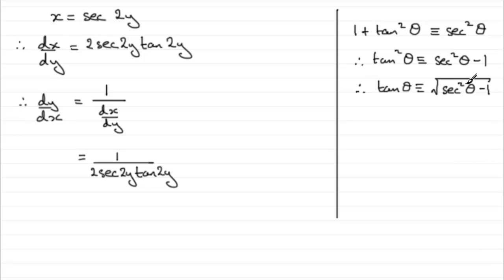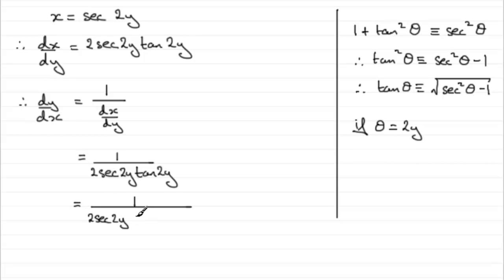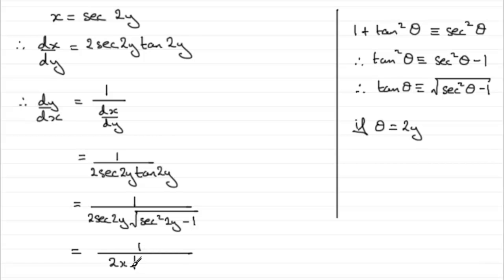So what that's really implying is: if theta equals 2y, then tan(2y) = √(sec²(2y) − 1). So I can write this as 1 over 2sec(2y) multiplied by √(sec²(2y) − 1). And now knowing that sec(2y) is x, I can finish this off as 1 divided by 2x multiplied by √(x² − 1). So we've got dy/dx totally in terms of x.